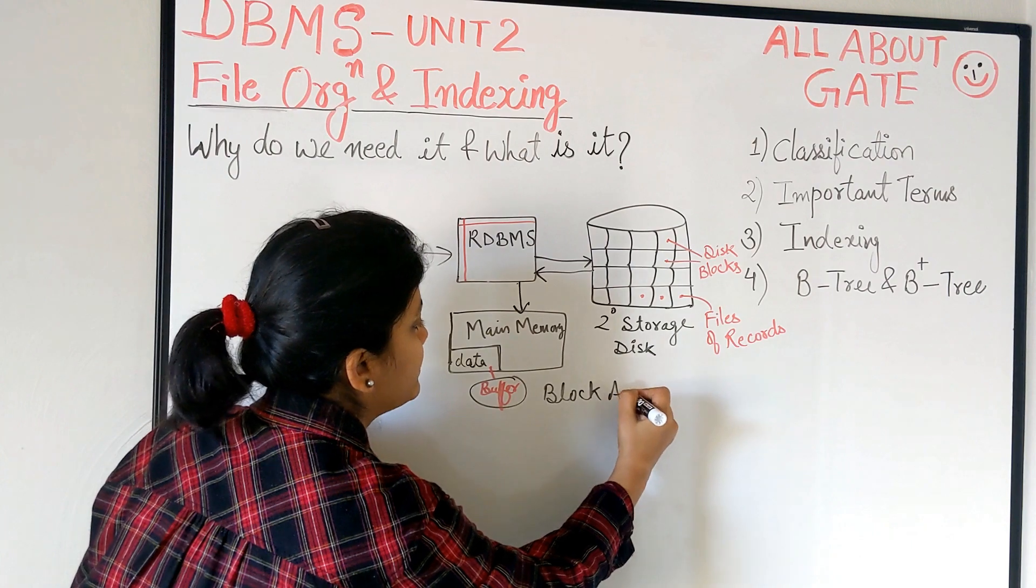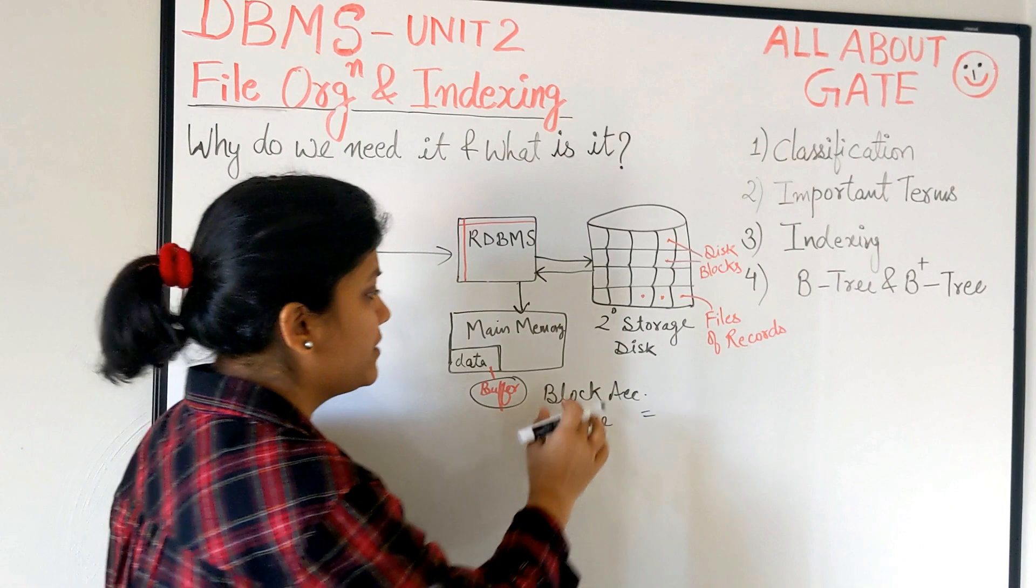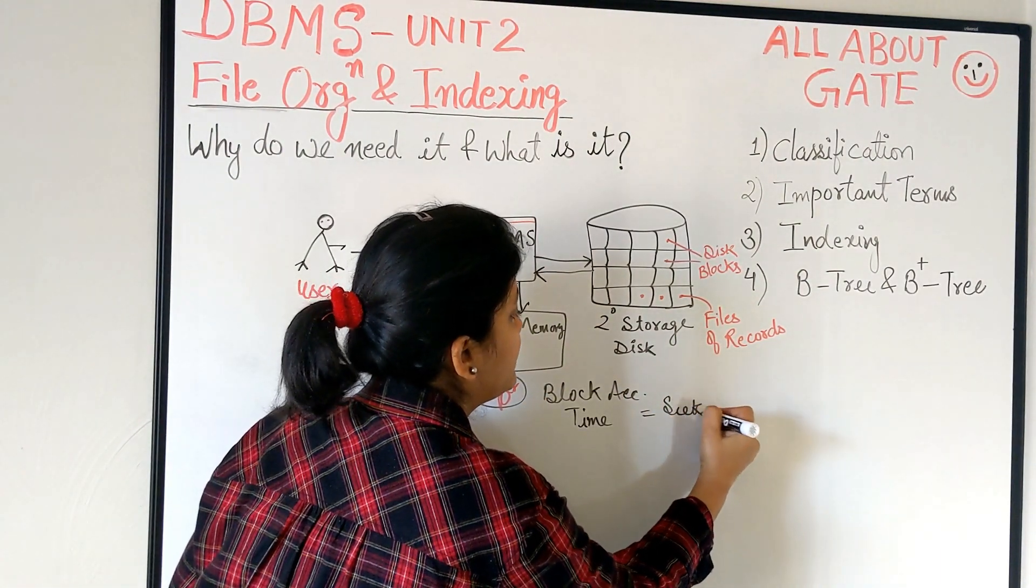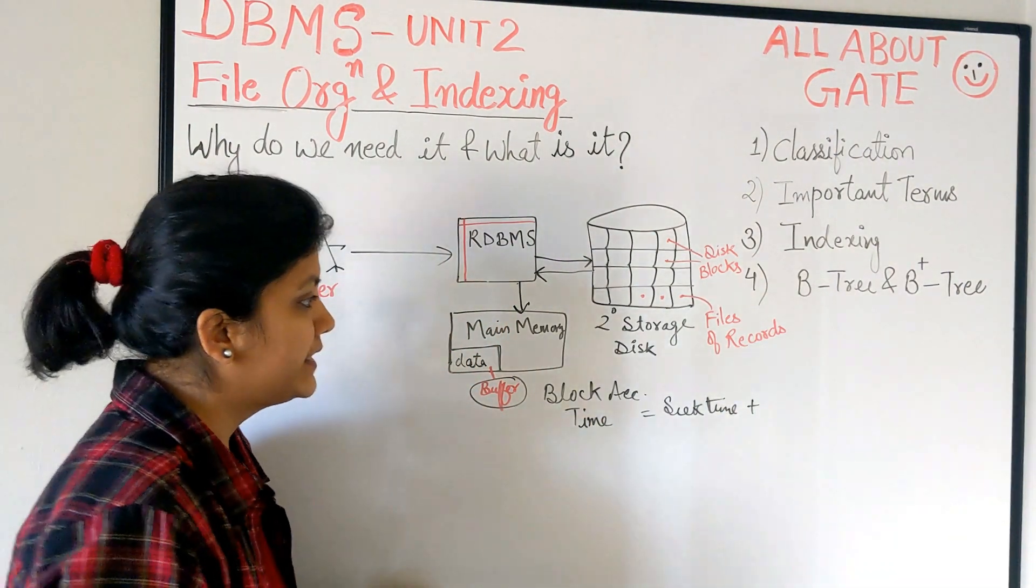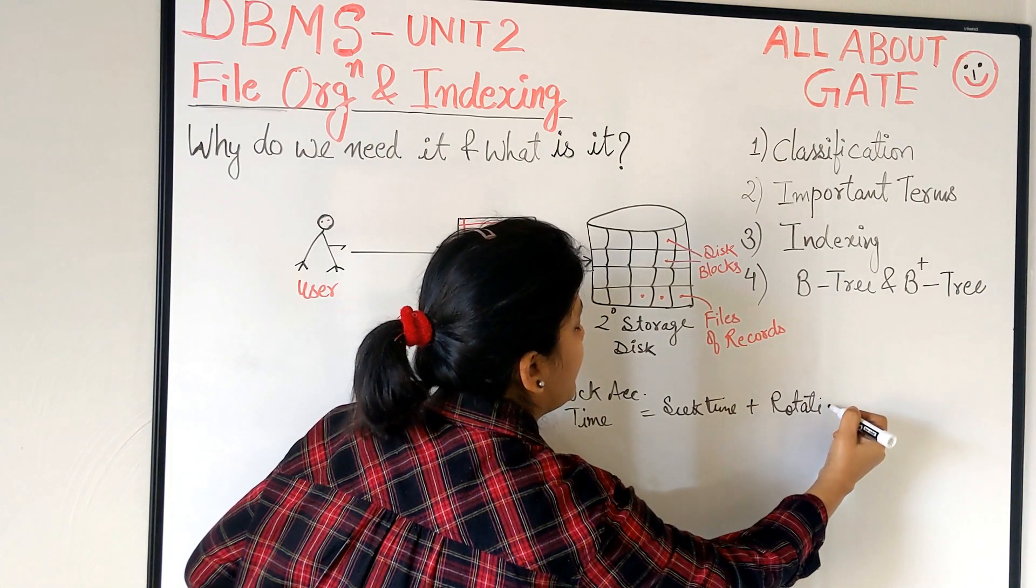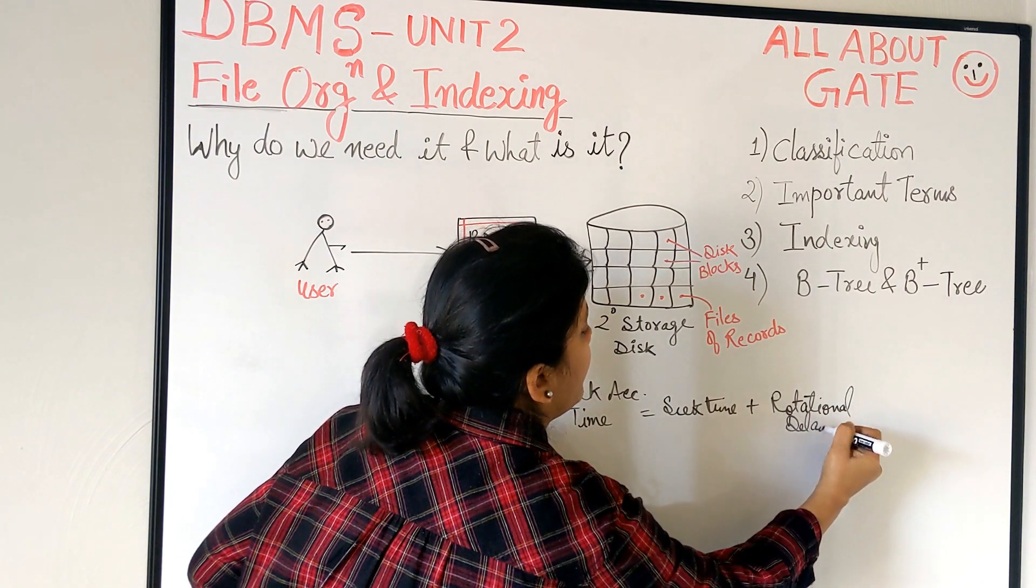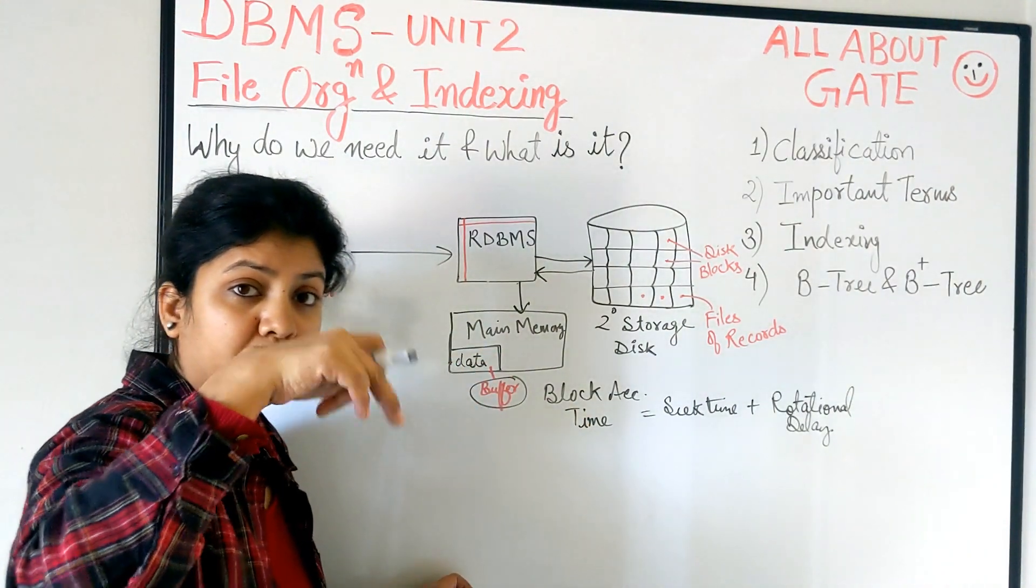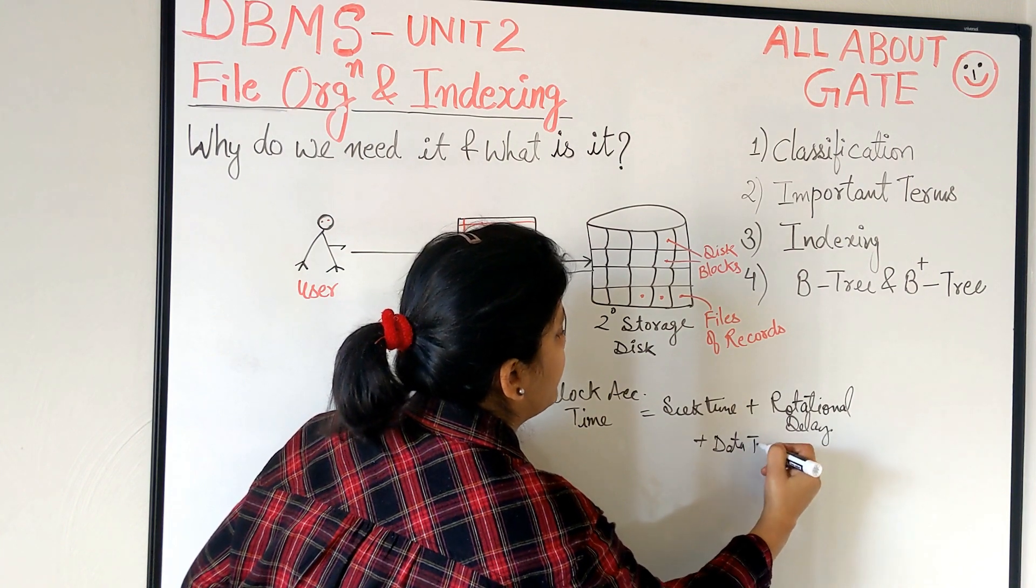I'm not going to discuss the entire geometry of the disk and its performance here - that's for computer organization and operating systems. I'll simply define the block access time: it's the seek time (reaching the particular track of the disk), then rotational delay (rotating the disk to reach the desired sector), and then the data transfer time or block transfer time.